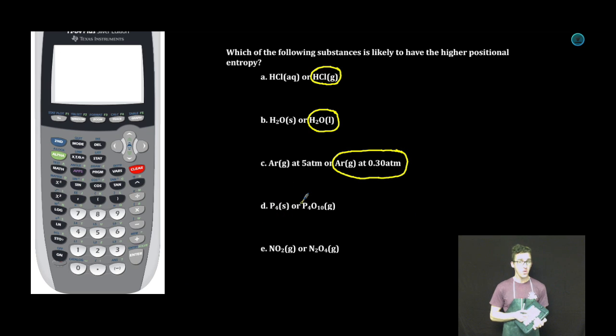Solid P4 or P4O10 gas? Correct answer, P4O10 gas. Your gases, greater entropy than your solids. Additionally, P4O10 is a far more complex molecule, way more electrons than P4.